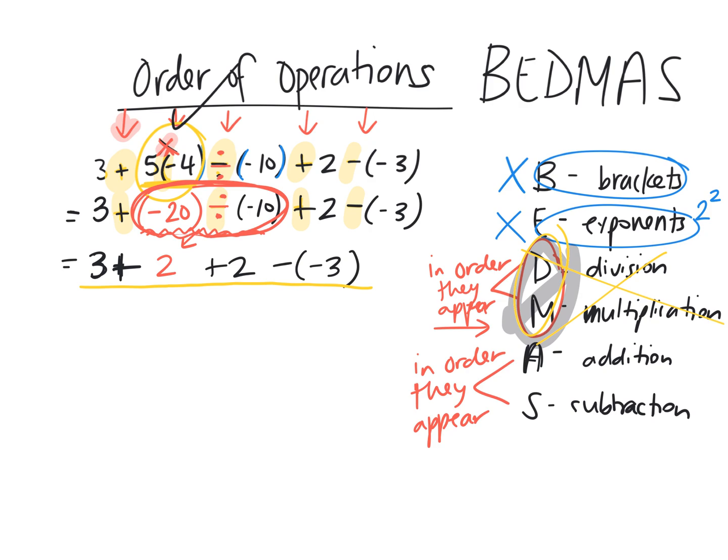Do we have adding and subtracting? Yes. Does it matter what order I do those in? In the order they appear. So we're just going to work from left to right, just like we did earlier. So left to right, 3 plus 2? 5. We're done that. So now I'm going to write plus 2 because I didn't do anything with that. Take away negative 3.